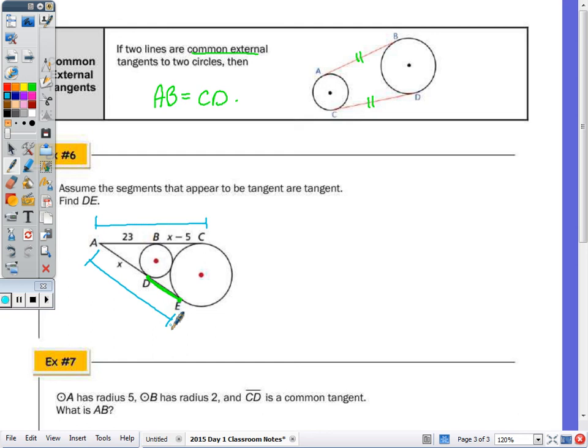AC is congruent to AE, and AD is congruent to AB, so X = 23. To find length DE, note that DE equals BC by subtraction, since the wholes are congruent and the parts are congruent. Therefore, DE = X - 5 = 23 - 5 = 18.